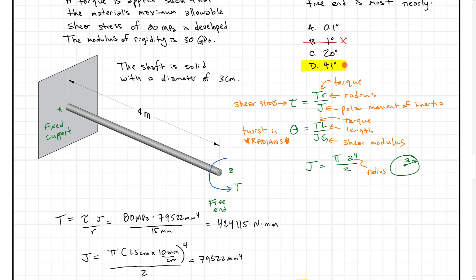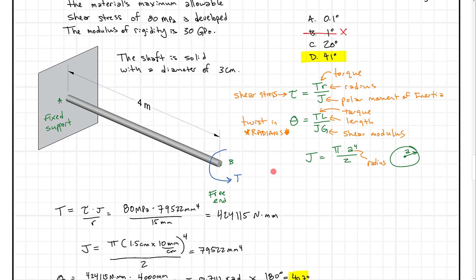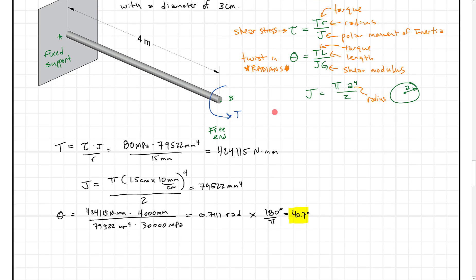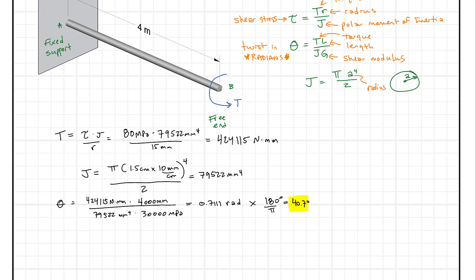Alright so for those of you that want an easier way let me show you a little shortcut here. Because what you'll notice is that in both of these equations we have J. And here this is kind of cool because J and J well what happens? Well let's just play a little game of algebra here. So if we take theta here I'm just going to make a little bit of room here. And if we take theta let's see what happens.